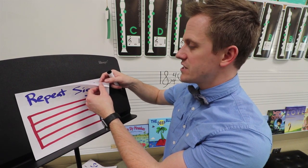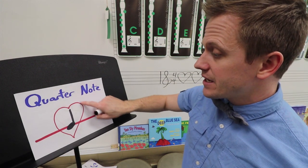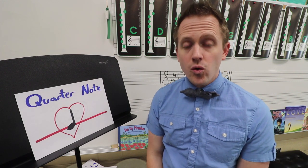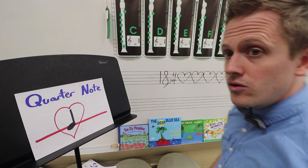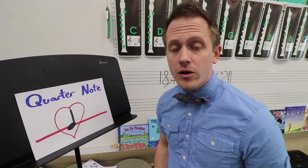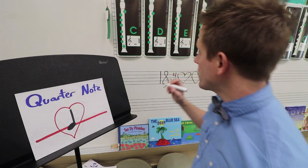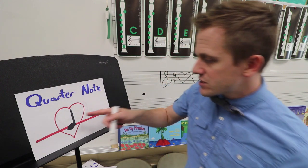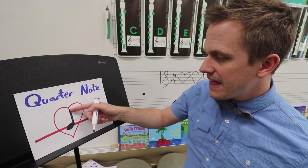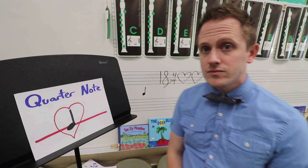Our next symbol of notation is a quarter note. I have the quarter note drawn inside of a heart because quarter notes take up one beat in a 4/4 time signature. As you write it on your paper, you're welcome to write anywhere you want — on a staff or off a staff. I want you to draw a quarter note. I like to start with the note head, which is the circle part of the note, and then I add the stem, the vertical part of the note. That's a quarter note.